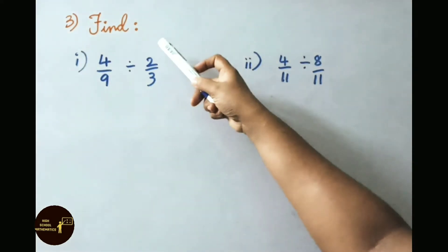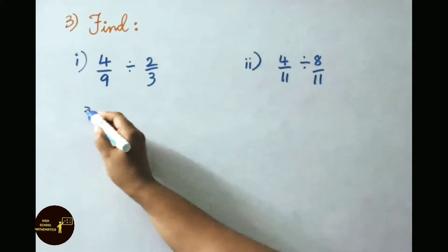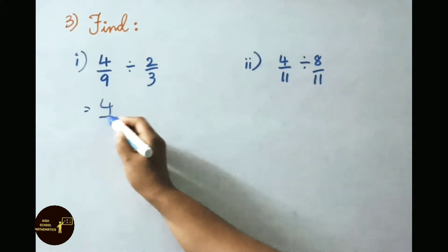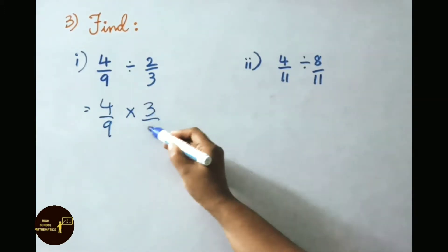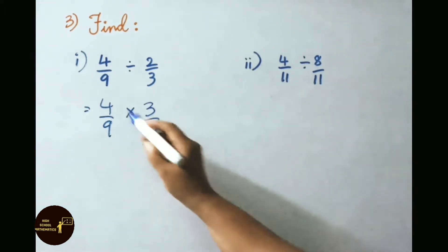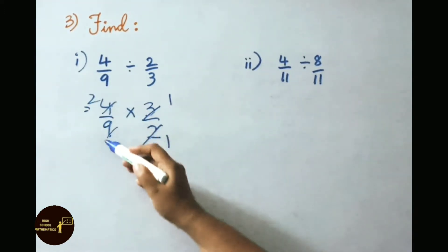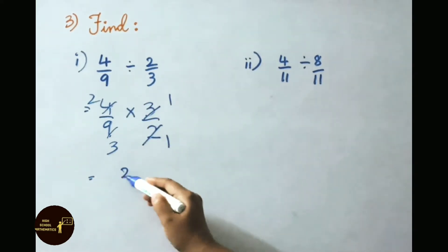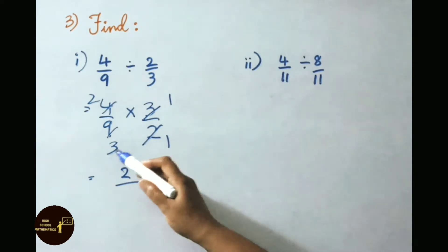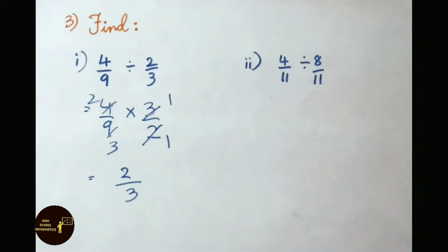See the third sum now: Find 4 by 9 divided by 2 by 3. That equals 4 by 9 into the reciprocal of 2 by 3, which is 3 by 2. Cancel: 2 into 4 gives 2, and 3 into 3 gives 1. Multiply the numerators: 2 into 1 is 2. Multiply the denominators: 3 into 1 is 3. So the answer is 2 by 3.